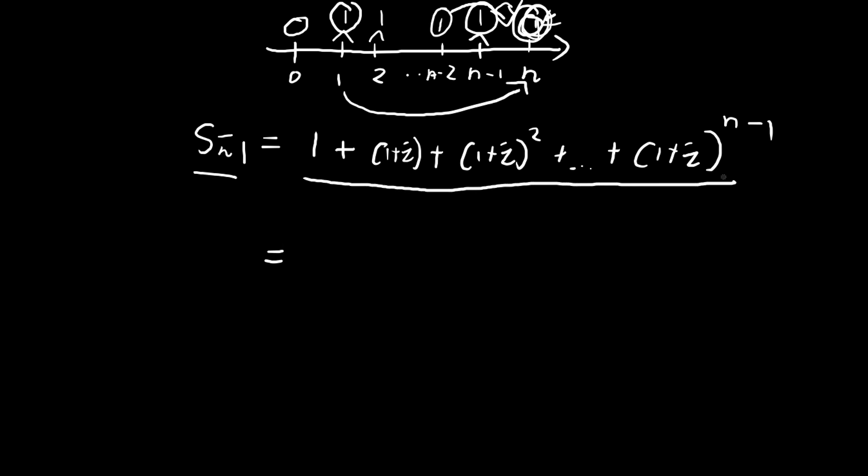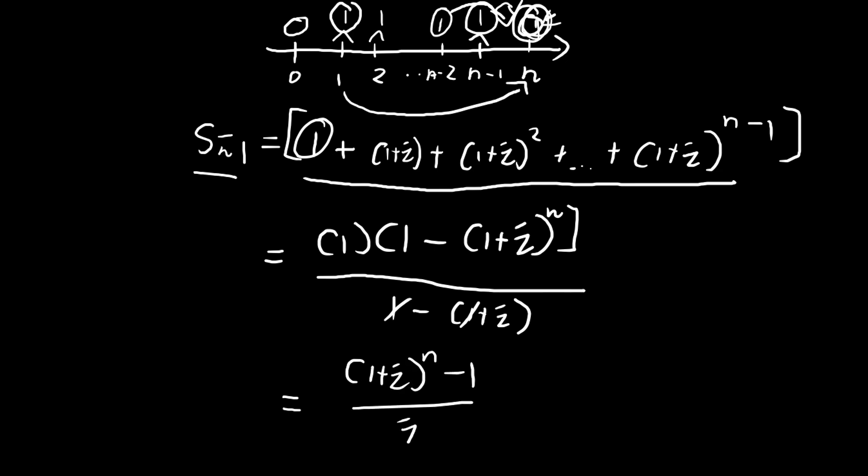So again, this is a geometric series. We just apply the formula. The first term is equal to 1. And the common ratio is equal to 1 plus i. And we have, if you'll notice, n terms, divided by 1 minus the common ratio. Notice that these ones cancel out. So we have a negative i in the denominator. And this negative, we can get rid of the negative and flip the terms on top. So we get 1 plus i to the power of n minus 1, divided by i. So there we have it. This is our future value, our accumulated value.